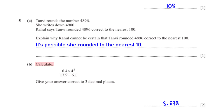Calculate 6.4 times 4 squared over 17.9 minus 6.1. Give your answer correct to three decimal places. When we type this into the calculator, we get 8.678 rounded to three decimal places.